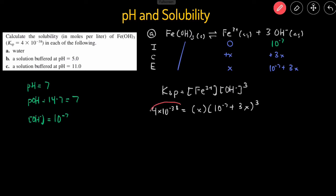So since the K value is so small, 10 to the negative 38, it's really small. It means that this reaction happens to a very tiny extent and that the x values are really small. So that means we can ignore the plus 3x because this x value is going to be so small in comparison to 10 to the negative 7 that it's insignificant and we can ignore it. So that means this really simplifies to just 10 to the negative 7 cubed.